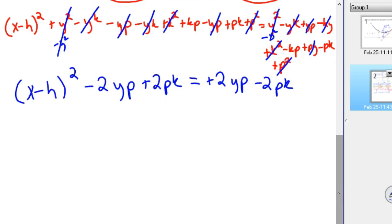So next step, I'm going to flip it, just as it is, because I like working like this, so 2YP minus 2PK equals X minus H squared minus 2YP plus 2PK.